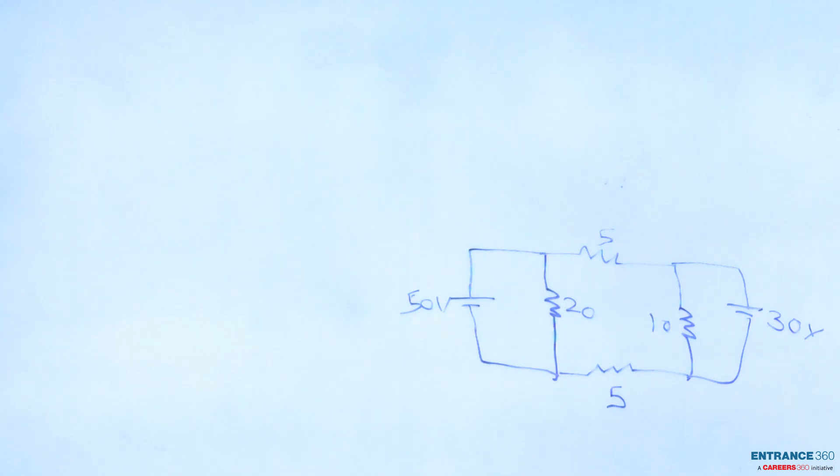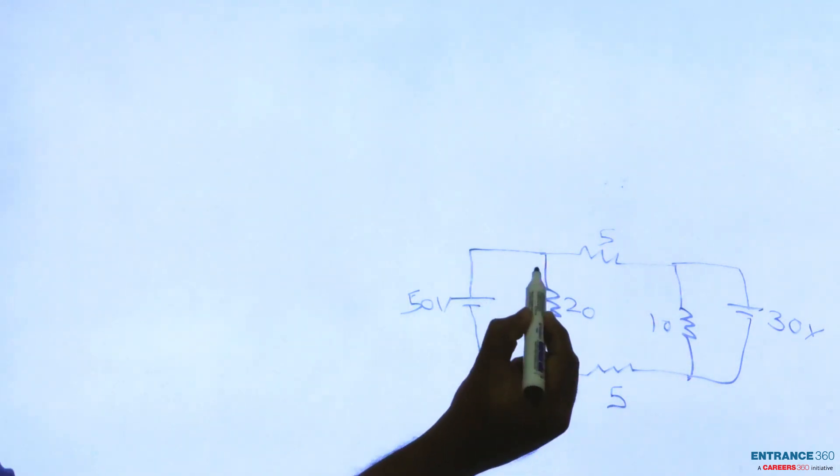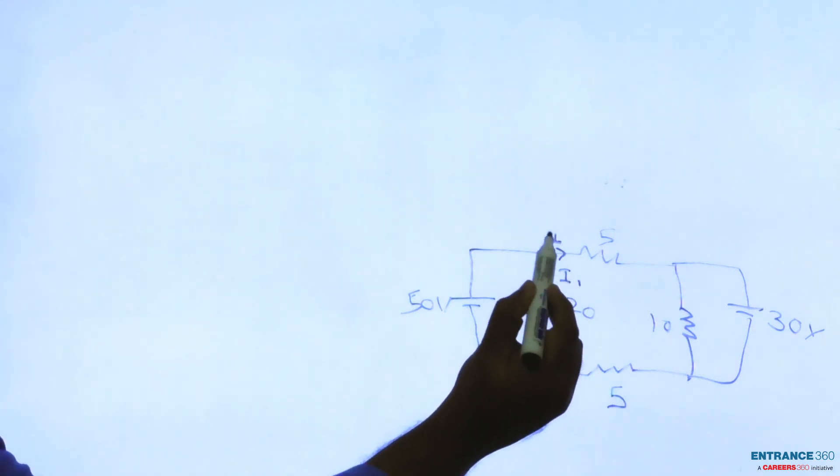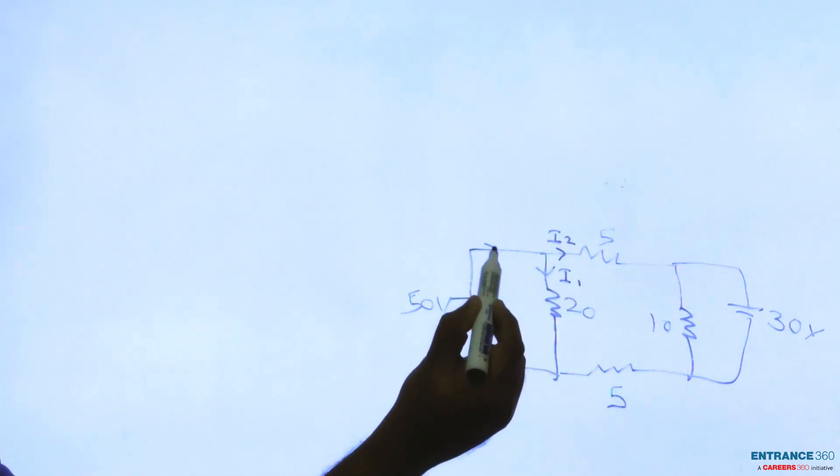Let's say current flowing through this branch is I1, this branch is I2, so that current coming here will be I1 plus I2.